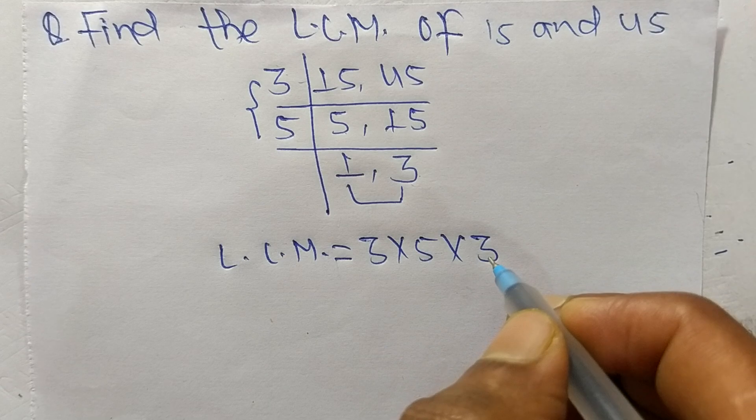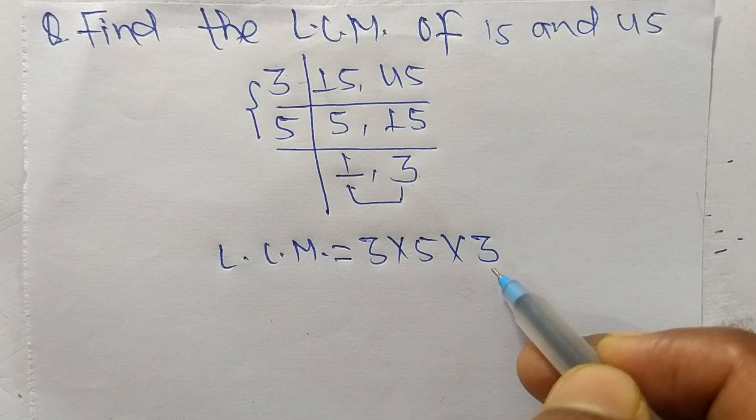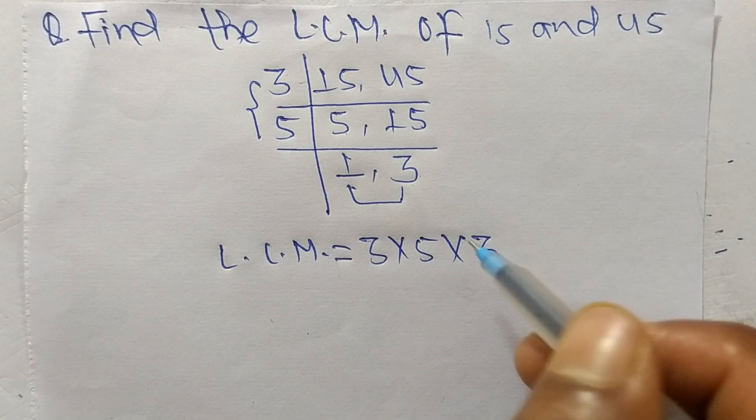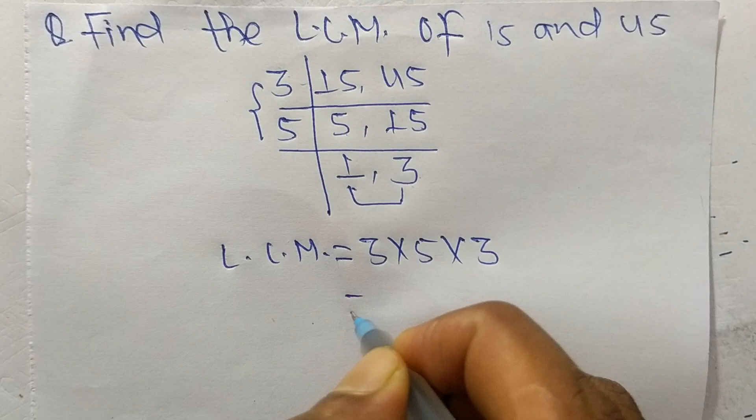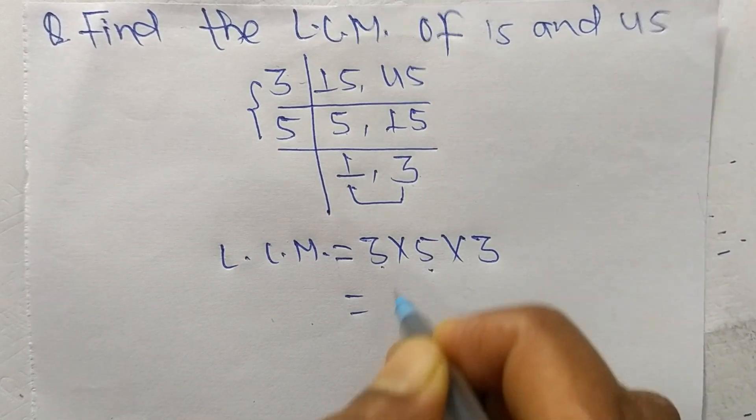We take only 3 and we neglect 1 because by multiplying the number with 1 we get the same result, so we don't take 1. So 3 times 5 means 15, 15 times 3 means it is 45.